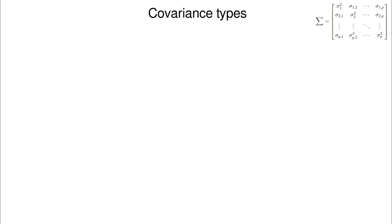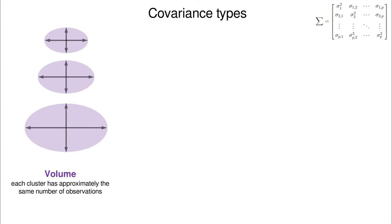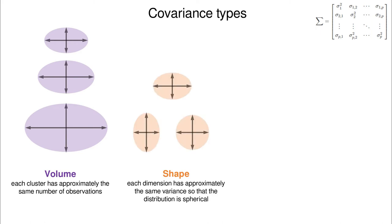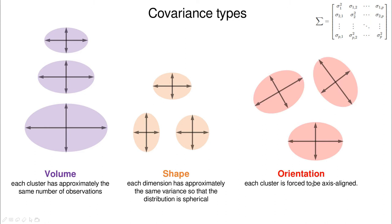According to the covariance matrix, clustering can change significantly. There are three attributes: volume (whether all clusters have the same size), shape (whether each dimension has approximately the same variance — spherical Gaussians — or not), and orientation (whether each cluster is aligned with the coordinate axes or can have any orientation). In the simplest case we force axis-aligned clusters; in the general case any orientation is allowed.